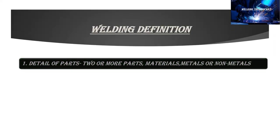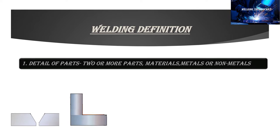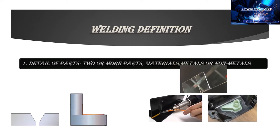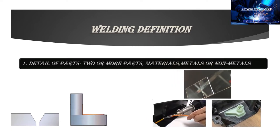The first component in the definition of welding is the detail of parts. The number of parts can be two or more. Some definitions use the word 'parts' and cover the applicability of welding to all materials including metals, non-metals, thermoplastics, and glasses. Some definitions restrict it to only metals and non-metals.